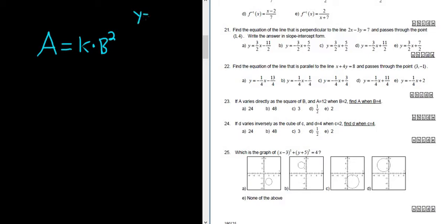Y varies directly as X means it equals KX. Okay, if it says inversely, it's K over X. So it says directly, so it's just K. So A varies directly as the square of B. Okay, so A equals K B squared. Good stuff.